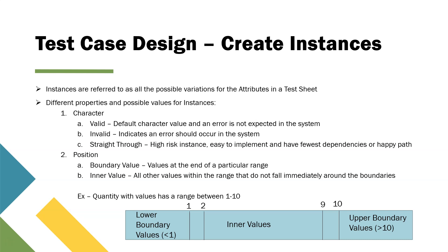When you create an instance, it has certain properties which can be altered based on your test case scenario. The two important properties you should consider are character and position. The character property tells us whether it's a valid instance, an invalid instance, or a straight-through instance. You can toggle between these three different types of character properties.